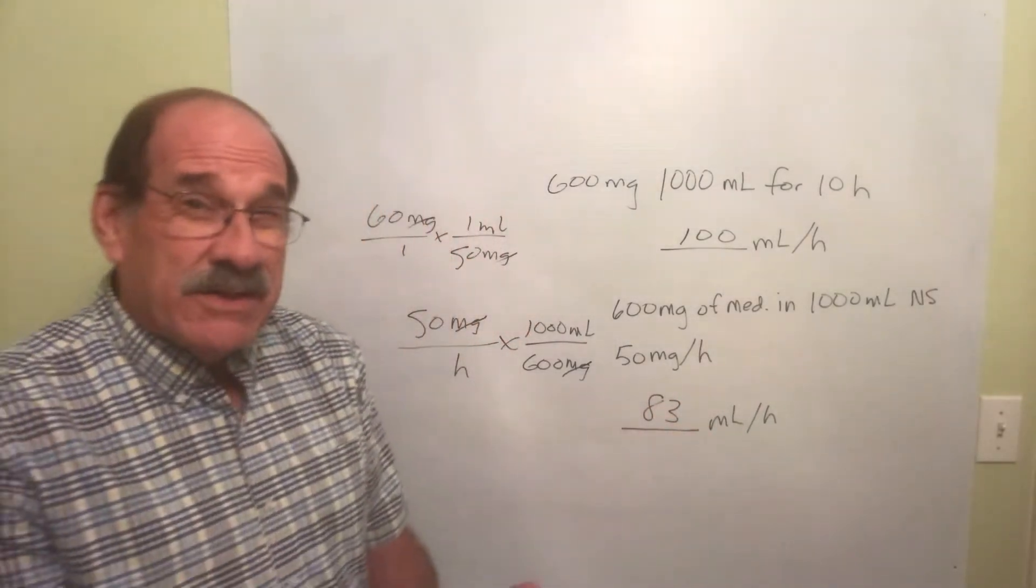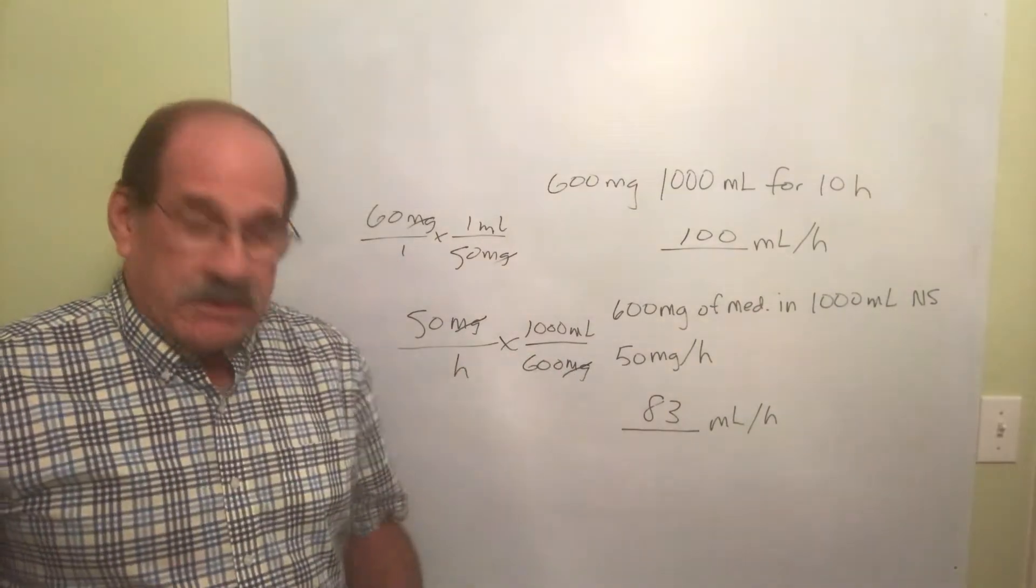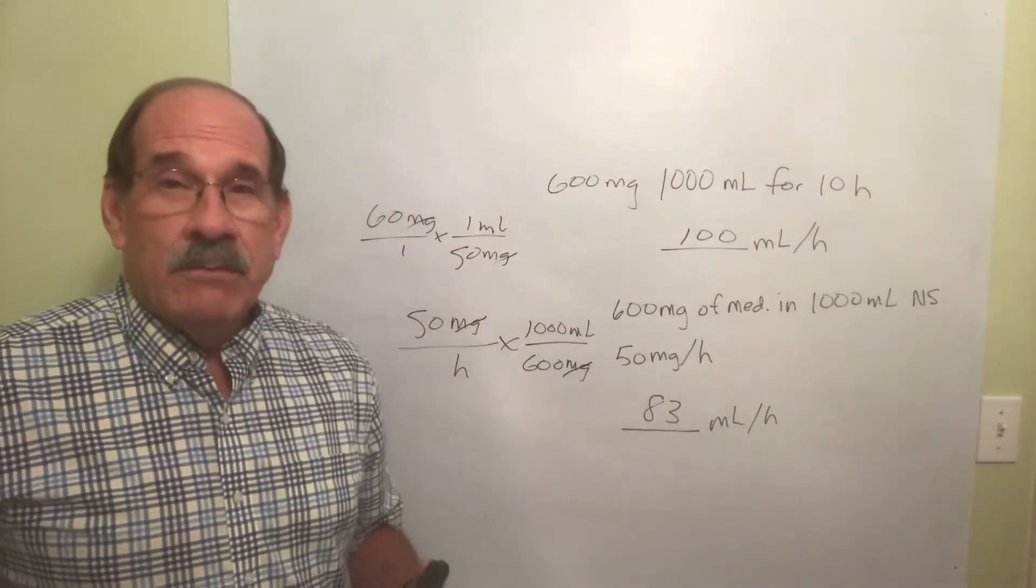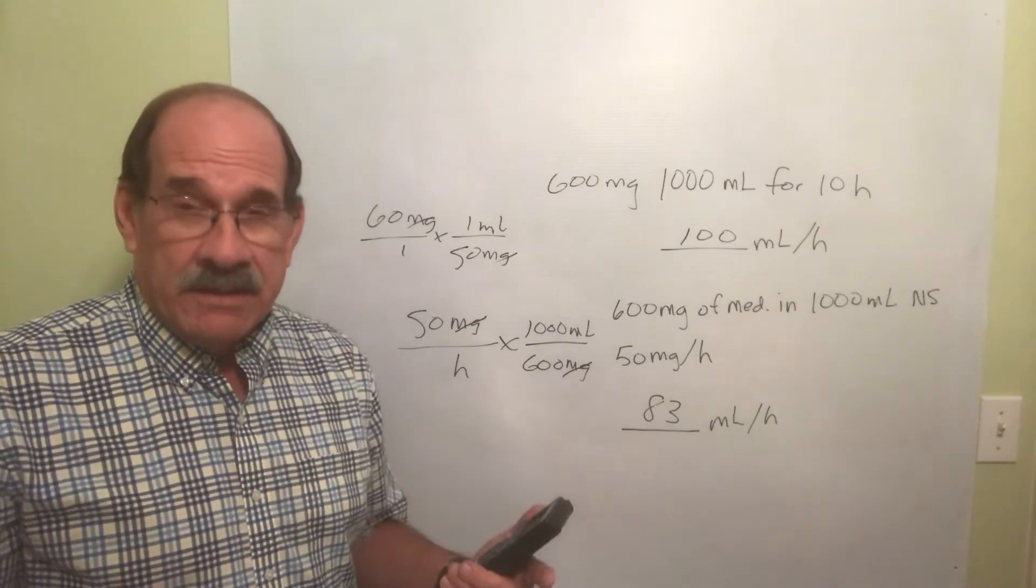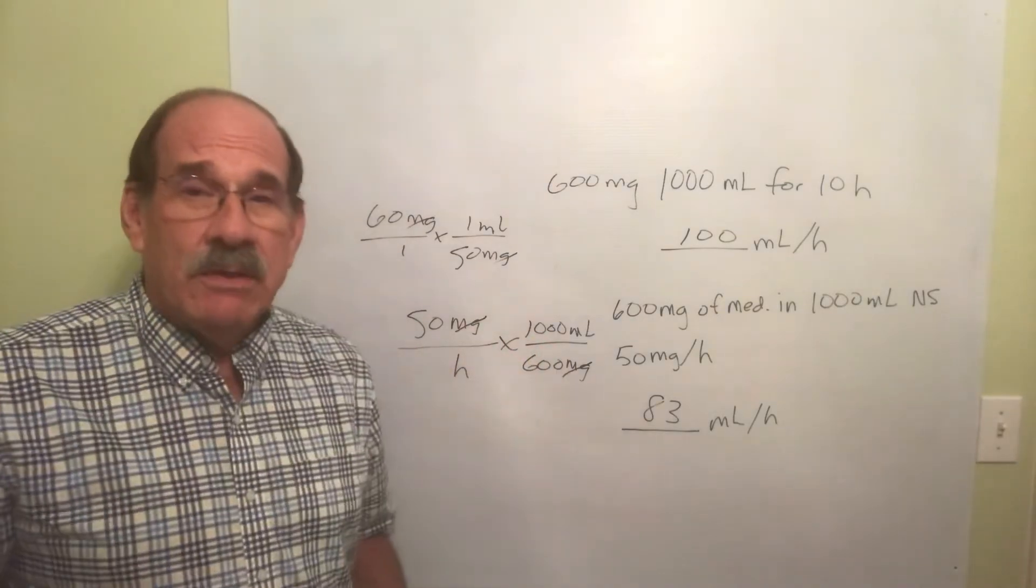But I discussed this in previous videos: the more zeros there are to punch into the calculator, the more chance you have of making a mistake and punching in too many zeros or too few.